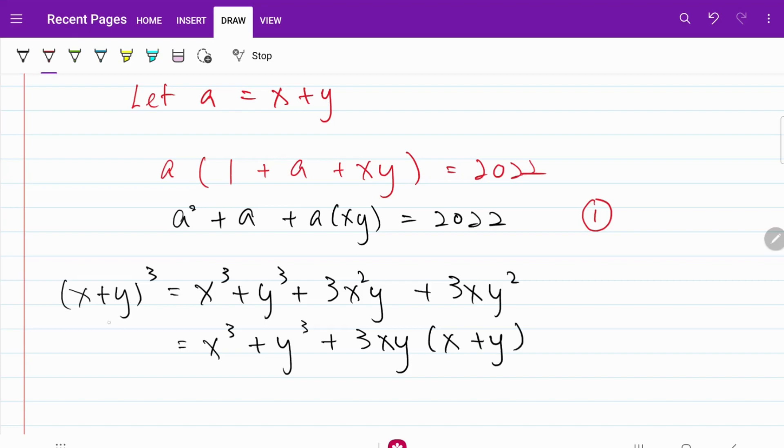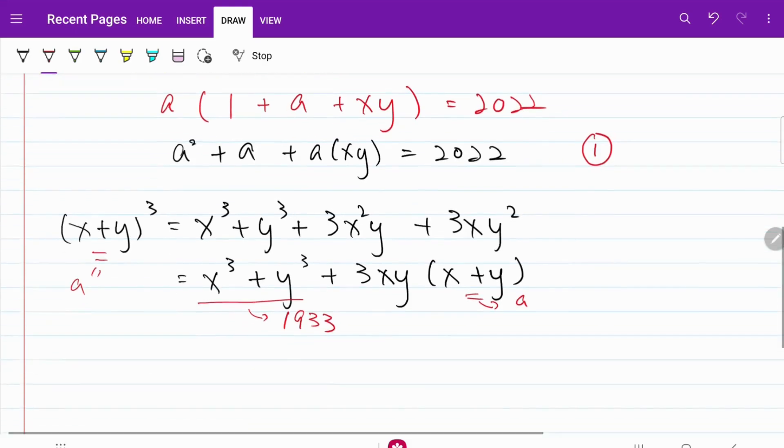Keep in mind, this is equal to a, and this is equal to a, based on our substitution. And based on the information that is given in the original question, this part right here is equal to 1933. So let's just go ahead and sub in all this information.